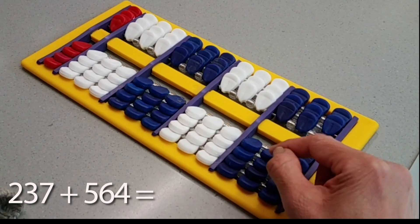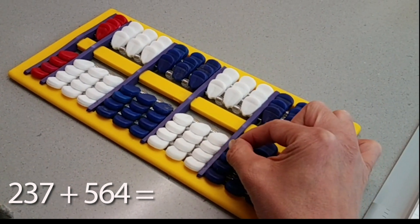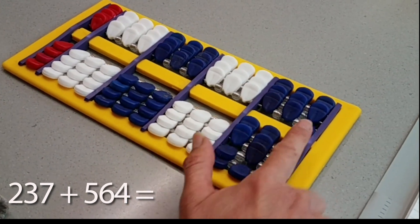Thirty is going to be represented by one, two, three. And then 200 is going to be represented by one, two. So this is the number 237.